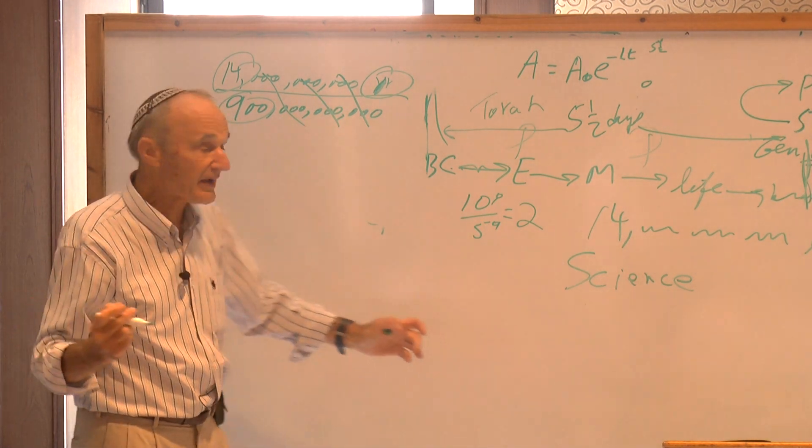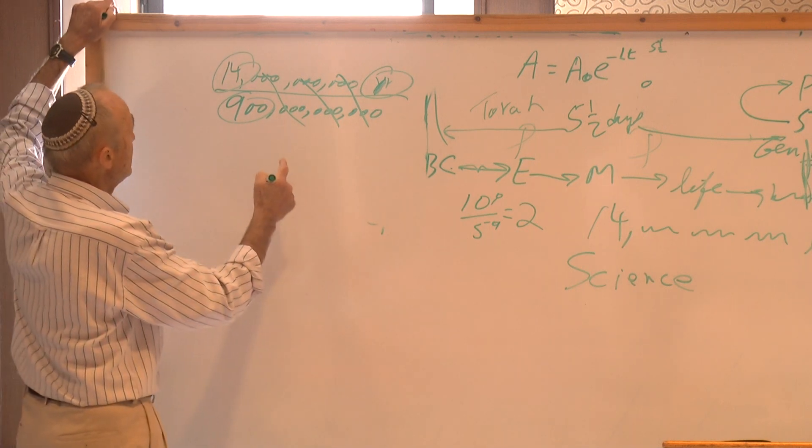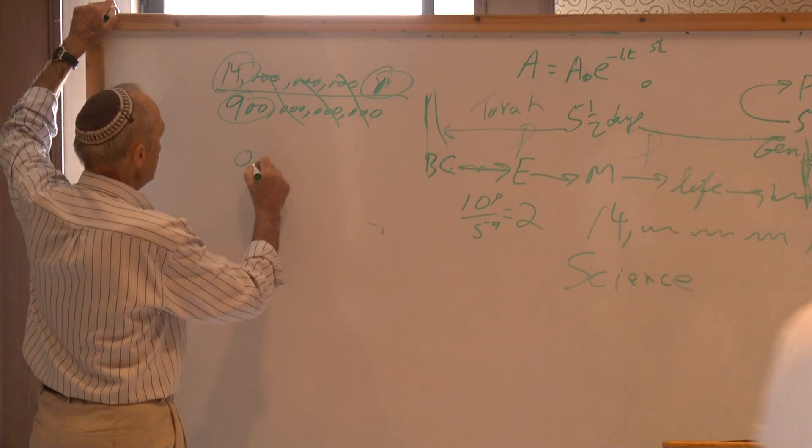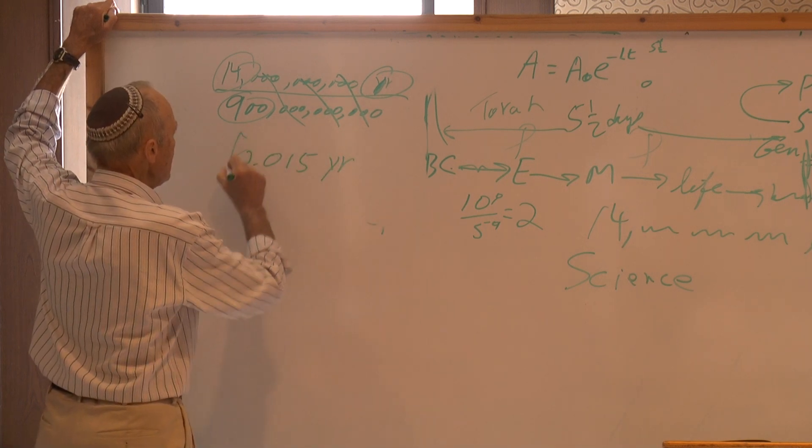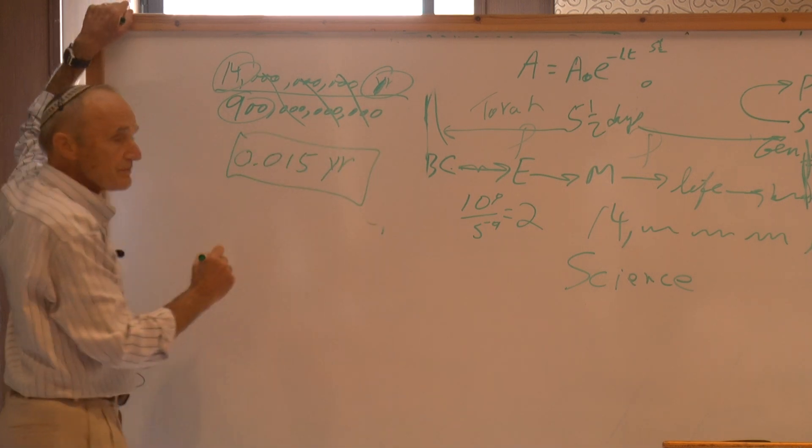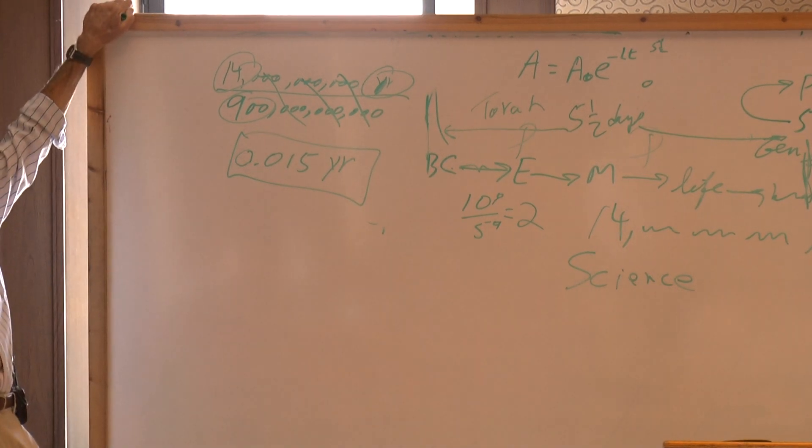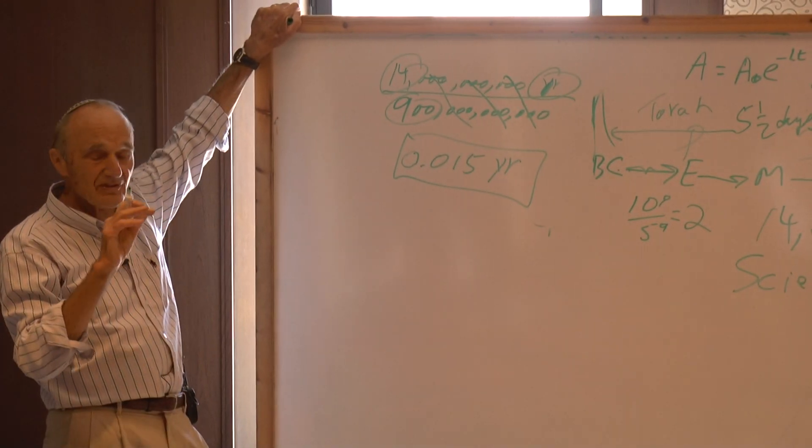Because that's exactly what Nachmanides says. Day one, there wasn't a second day. So you get 14 years divided by 900 comes out to be 15 thousandths of a year. The age of the universe from the Torah's point of view looking forward in time according to cosmology today.